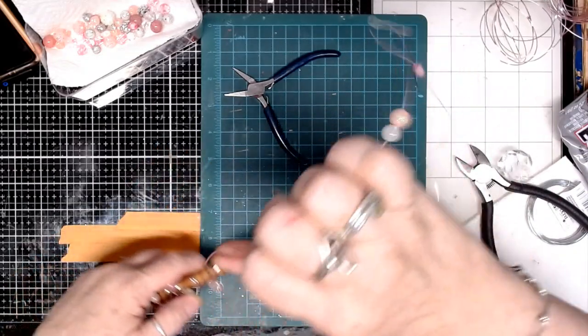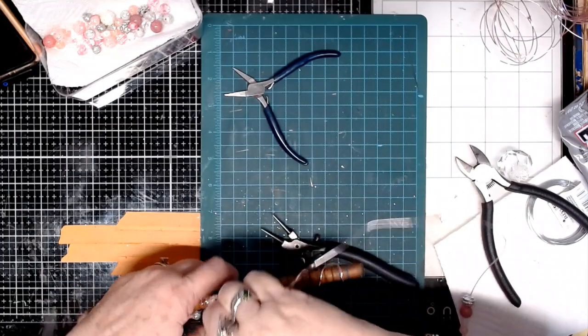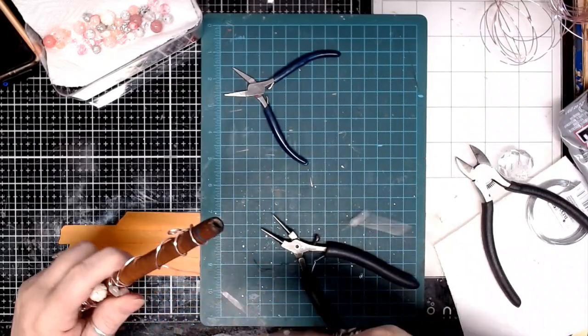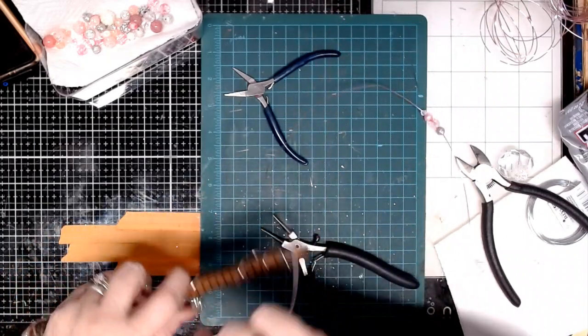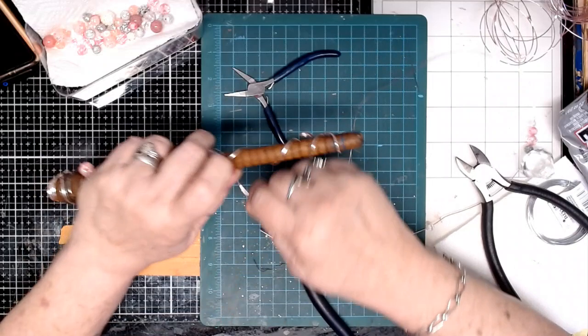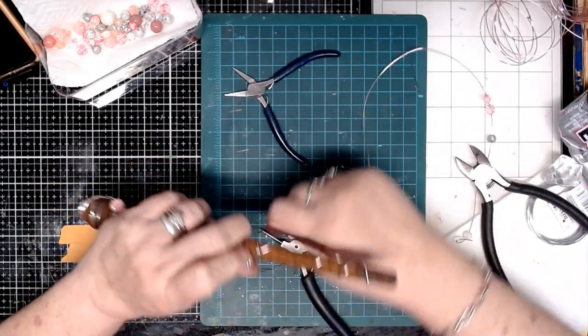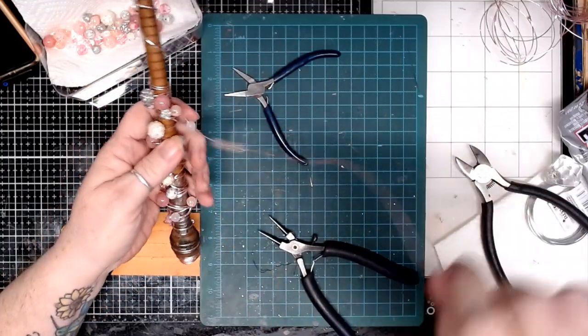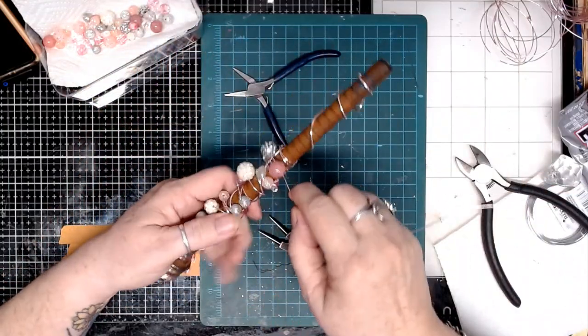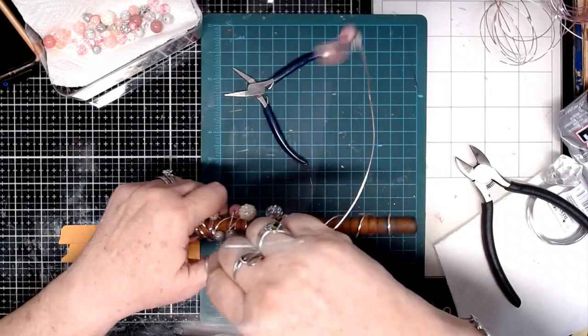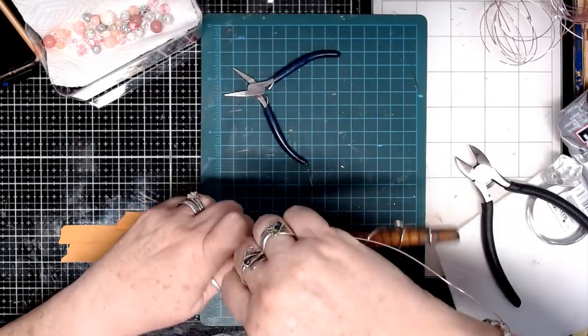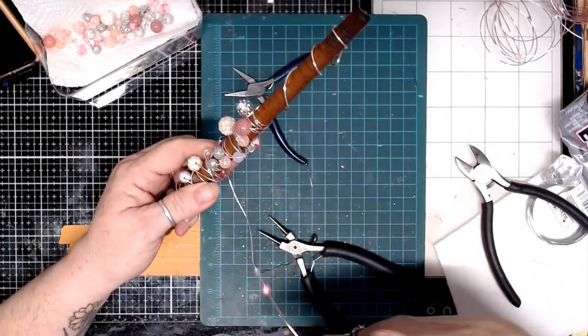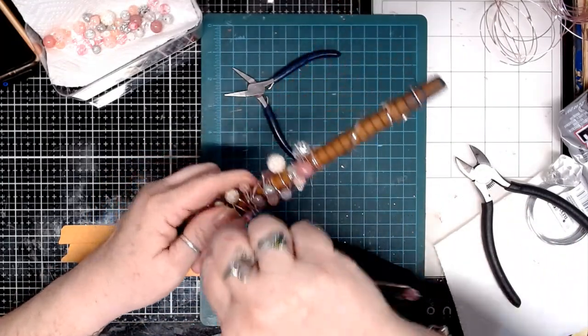I'm just going to keep wrapping until I get it how I want it. The amount of beads and spacing, however it is that makes you happy. Now I'm going to come back up and fill in some of those spaces because we don't need it all the way to the bottom. You've got to have room for your hand. But it's your wand, so if you want to put it all the way to the bottom, by all means.